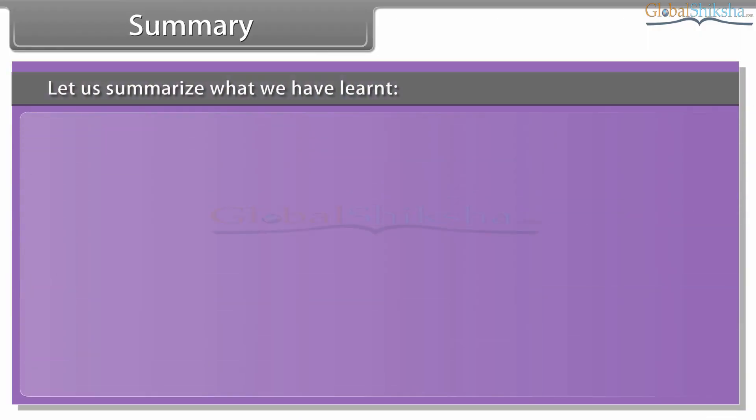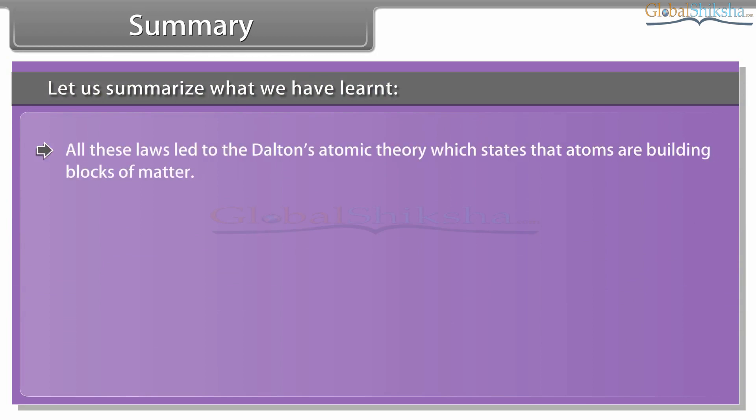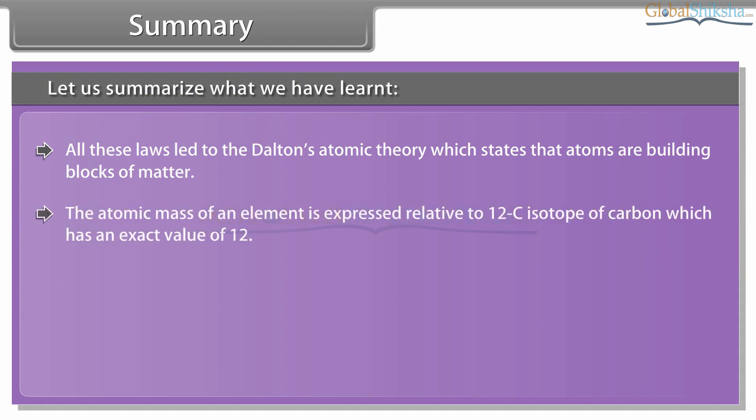Summary: all the laws of chemical combination led to Dalton's atomic theory, which states that atoms are the building blocks of matter. The atomic mass of an element is expressed relative to the carbon-12 isotope, which has an exact value of 12.